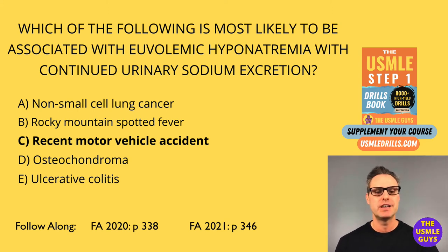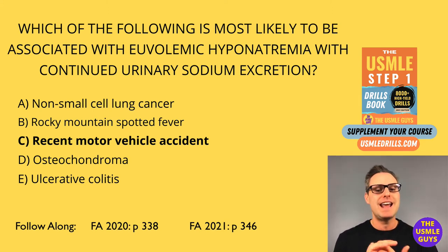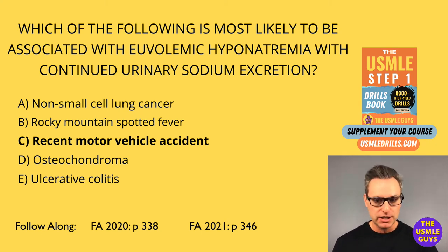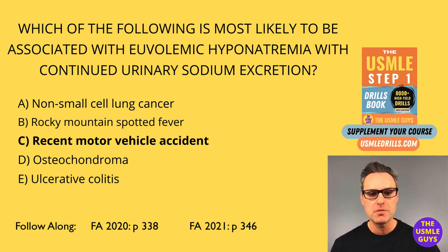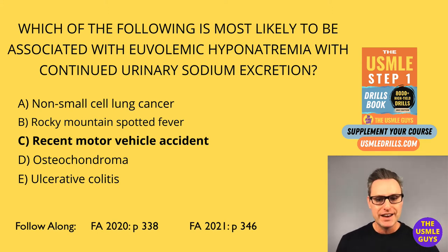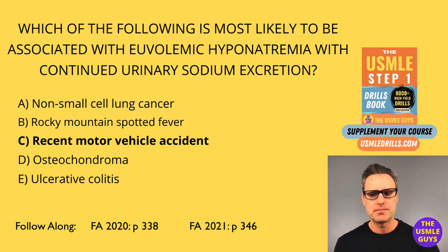As water is retained in this condition, it leads to a decrease in aldosterone and an increase in ANP and BNP. This in turn leads to increased secretion of sodium through the urine, which leads to normalization of extracellular fluid volume and euvolemic hyponatremia. All of this causes sodium levels to fall below the normal range, and this can cause serious consequences like swelling of the brain or seizure.